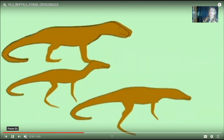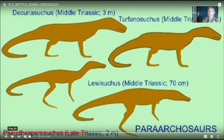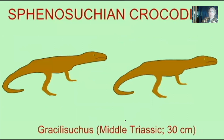Crocodiles and birds are the closest living relatives of each other today, given that they are both archosaurs. The very first crocodiles evolved in the Triassic period. Despite 250 to 300 million years of vertebrate history and about 100 million years of reptile history in the Paleozoic, there are zero crocodiles known from the Paleozoic — the first crocodiles appear in the Triassic of the Mesozoic, and most of them were small, just a foot to three feet long.